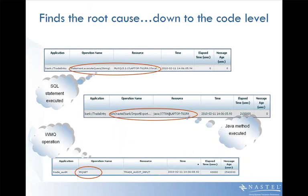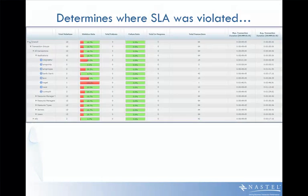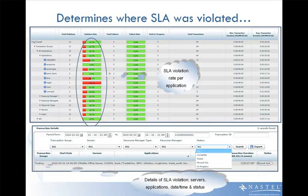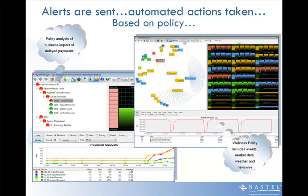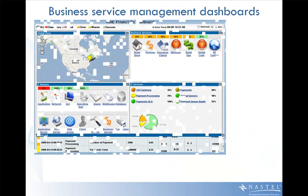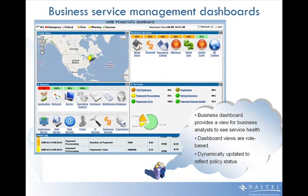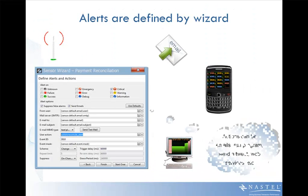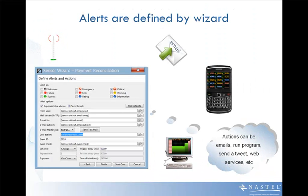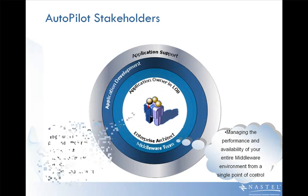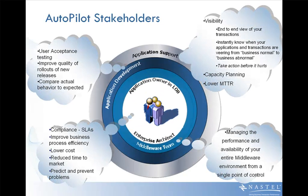We find the root cause down to the code level. On the business side, we also determine whether an SLA was breached, or if there's a trend indicating one is going to be breached. We have alerts sent out based on policy. You can see our IT dashboards, and we also have BSM dashboards, dynamically updated. Alerts are defined by wizard and can be notification or repair. Our stakeholders extend from the line of business to the middleware team to development through support.